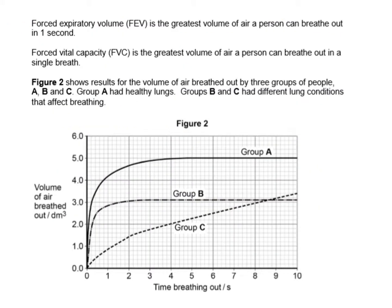The second part of the question gives us some definitions. The first is forced expiratory volume, or FEV — you should highlight that in the exam. FEV is the greatest volume of air a person can breathe out in one second. The next definition is forced vital capacity, or FVC — that's the greatest volume of air a person can breathe out in a single breath, so that's not one second but one breath.